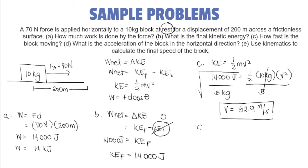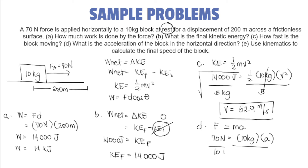Next, we have the acceleration. How can we find the acceleration? Simply, we could use Newton's second law of motion, where force is equals to mass times acceleration. Given the force of 70 newtons and the mass of 10 kilograms, we divide both sides by 10 kg, so acceleration is equals to 7 meters per second squared.